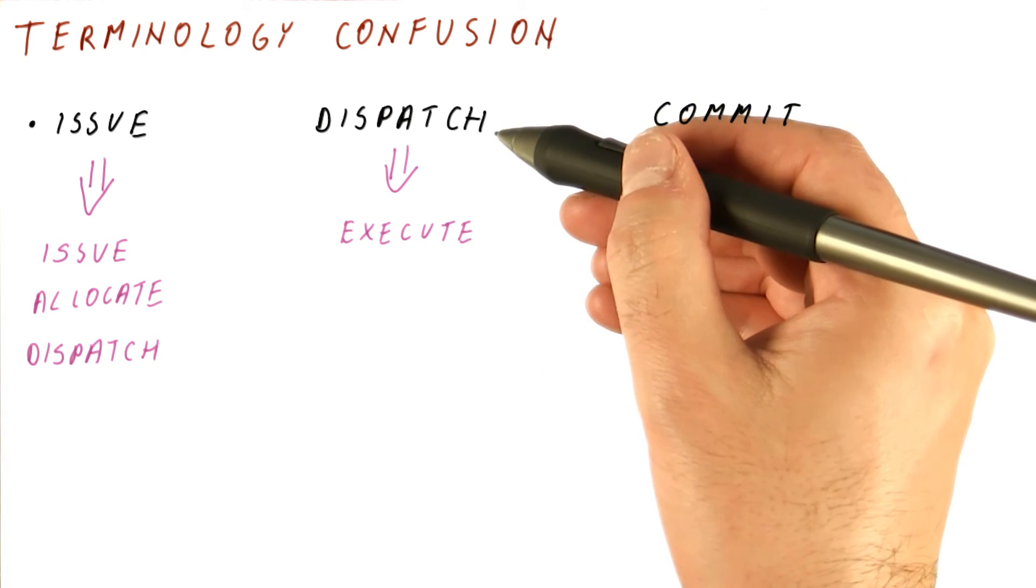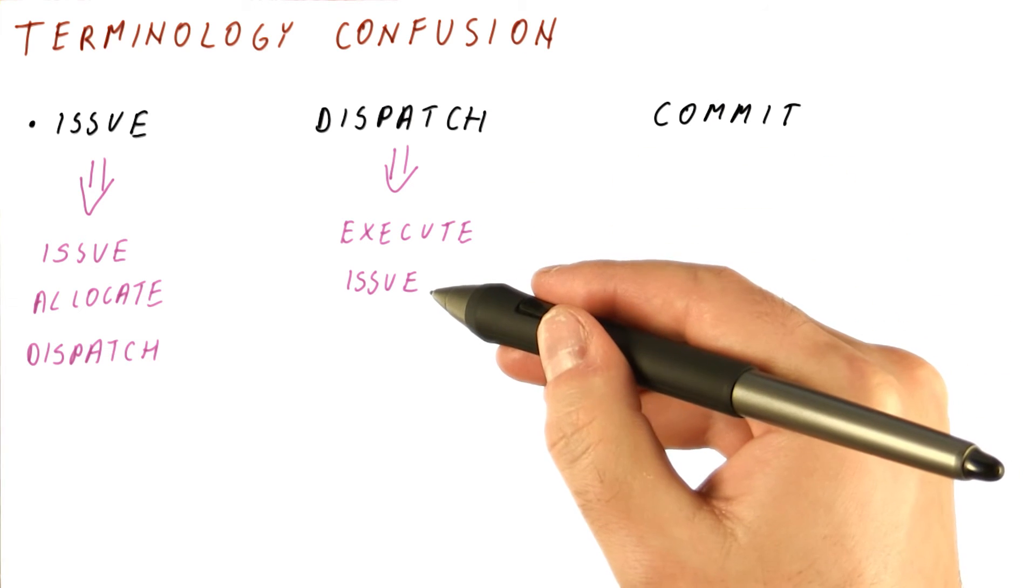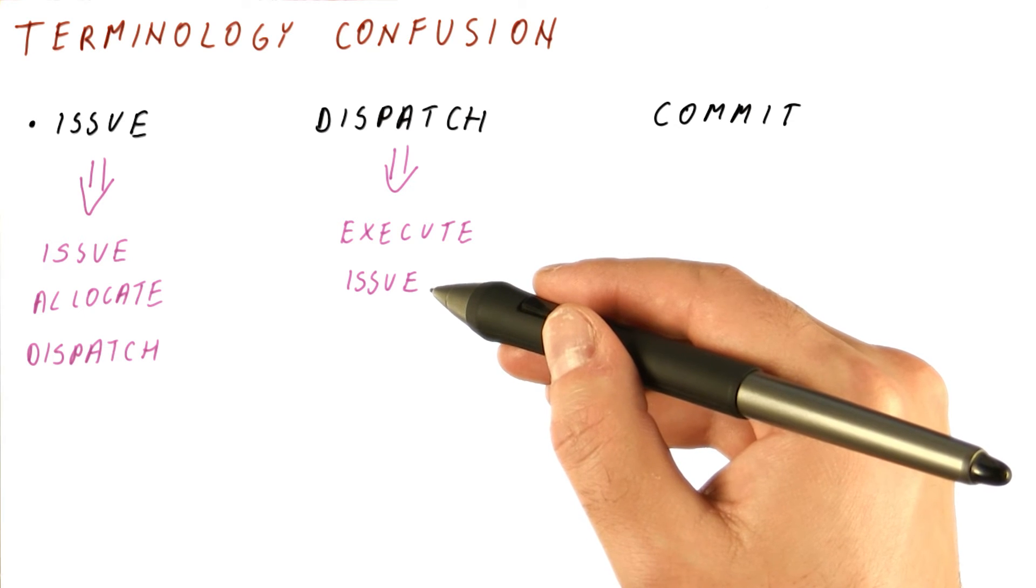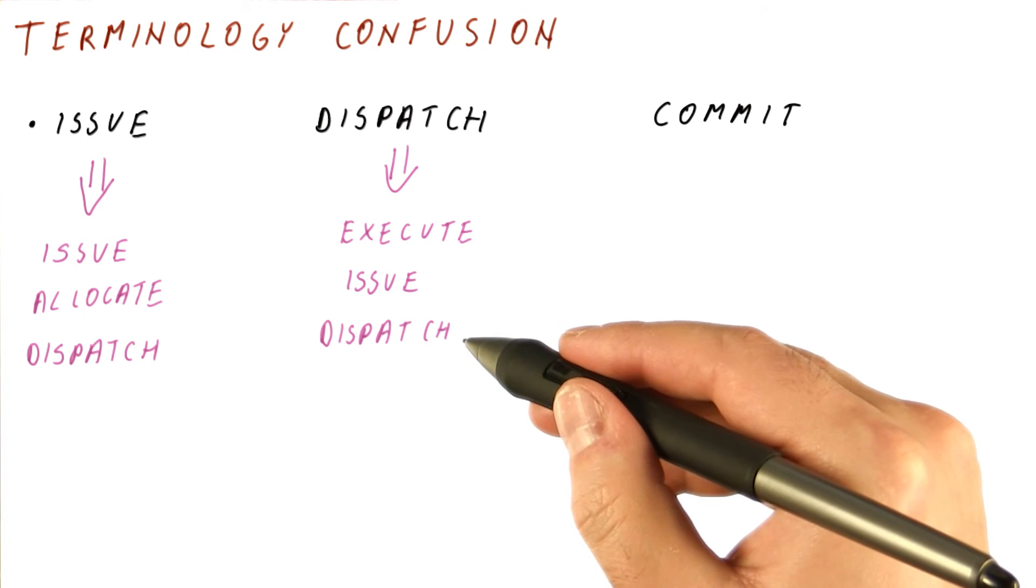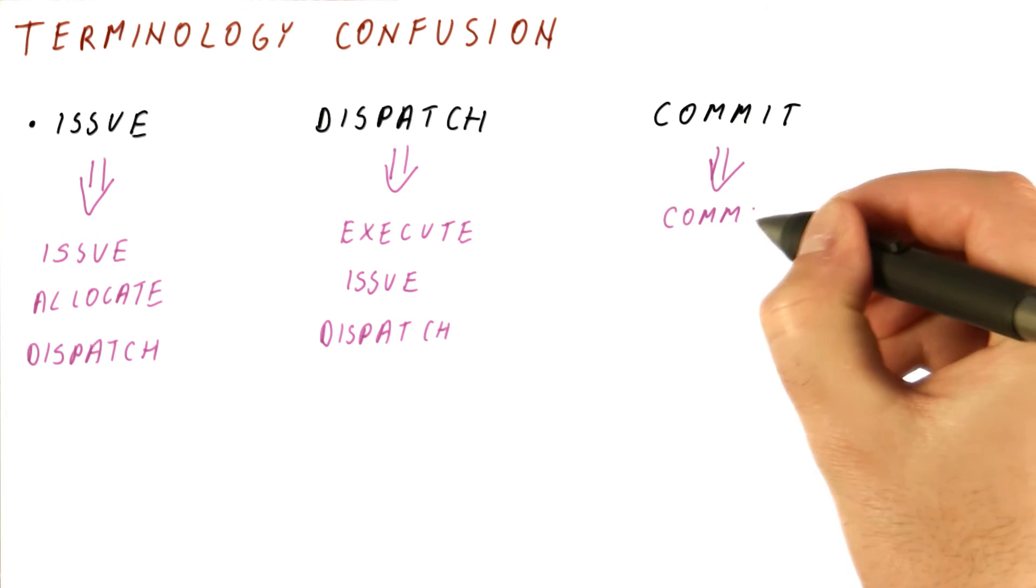Similarly, what we have been calling dispatch, some will call execute. Some will call it issue. So we issue the instruction from a reservation station to execution, as well as our usual dispatch, which is we dispatch the instruction to execution.